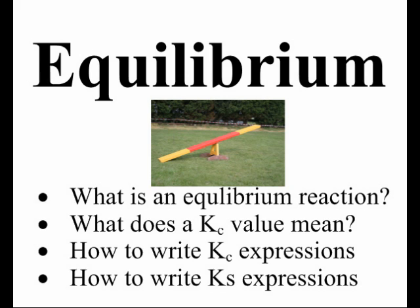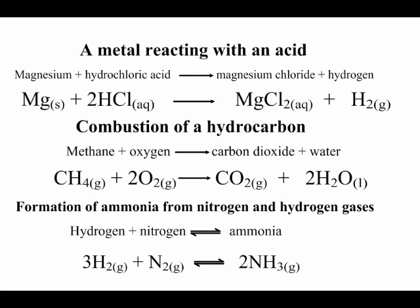It's going to go through the bullet points in order on the screen and we're going to start off by defining equilibrium reactions. If we were to take a reaction like a metal with an acid or combustion of a hydrocarbon we would describe those reactions as going to completion. What this means is that when those two reactants react they will continue to do so until something runs out at which point the reaction stops.